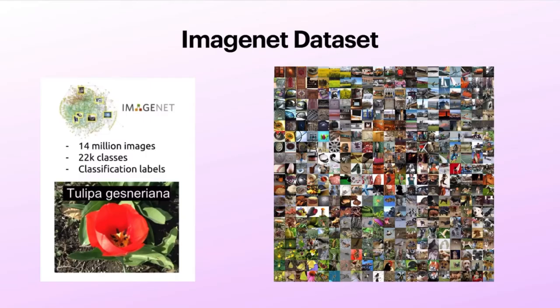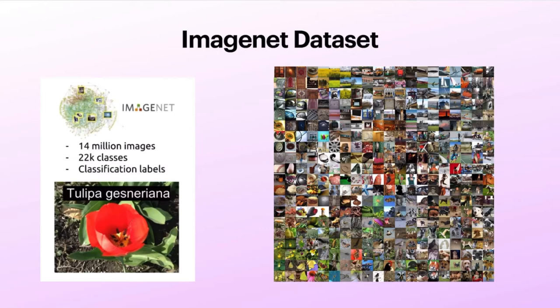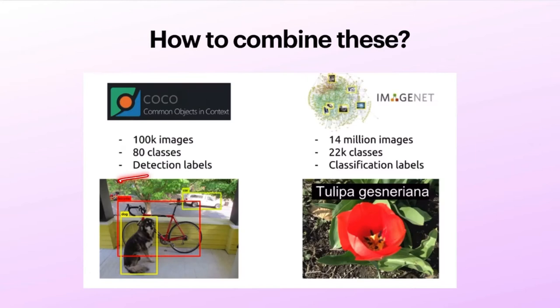As we have already seen, ImageNet is a huge dataset for classification. It has 14 million images and almost 22,000 classes. But it only has class labels — it doesn't have bounding box information. Can we use this classification data for object detection in some way? We have the COCO dataset for object detection labels and ImageNet with only classification labels. Is there any way we can combine these two so that we can train an object detector without needing all those labels?